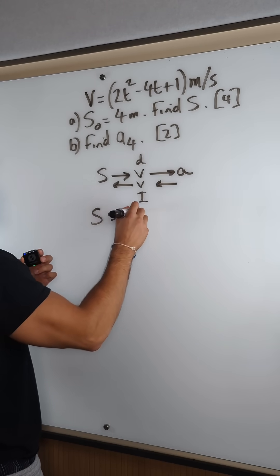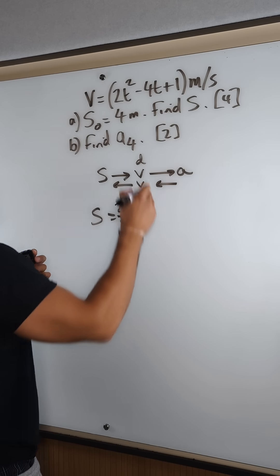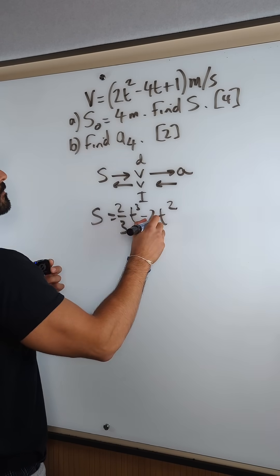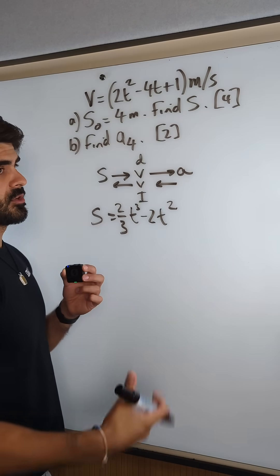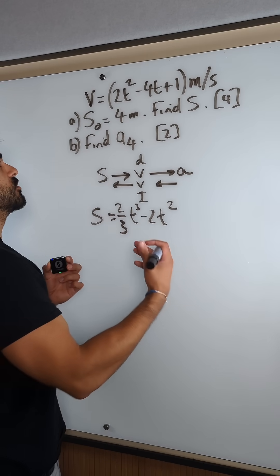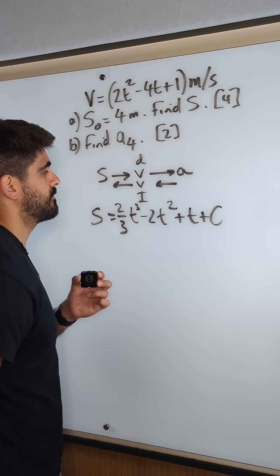So s is add 1 to the power, t cubed, 2 divided by the new power, 2 thirds. Add 1 to the power, t squared minus 4 divided by 2 is minus 2. Now here you know we can think of it as t to the power of 0 if you want. But you add 1 to the power, you're introducing t to the constant. Yeah it is a constant. Plus c.